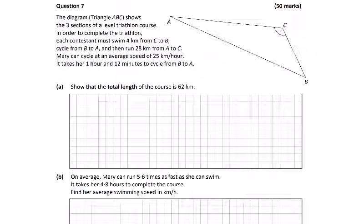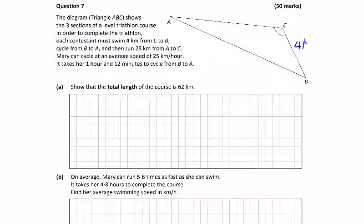Question 7 in 2021 is a triathlon course with three sections. In order to complete the triathlon, they must swim 4km from C to B, cycle from B to A (distance not given), and then run 28km from A to C. Label your diagram - this is the swim section, this is the cycle, and this is the run section.